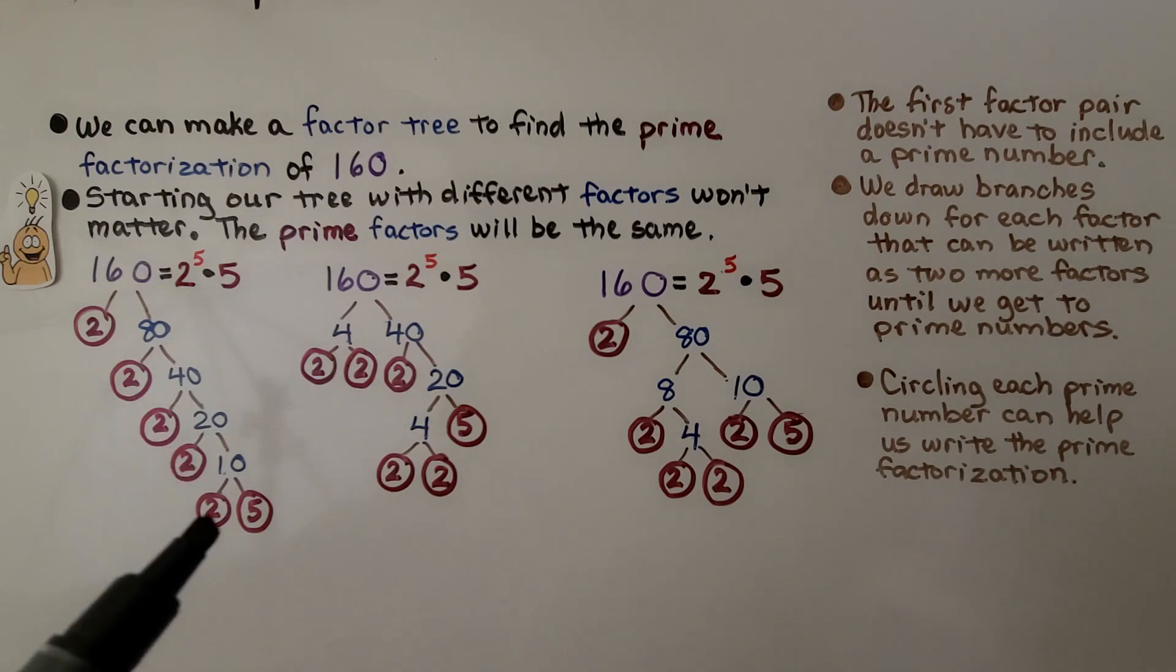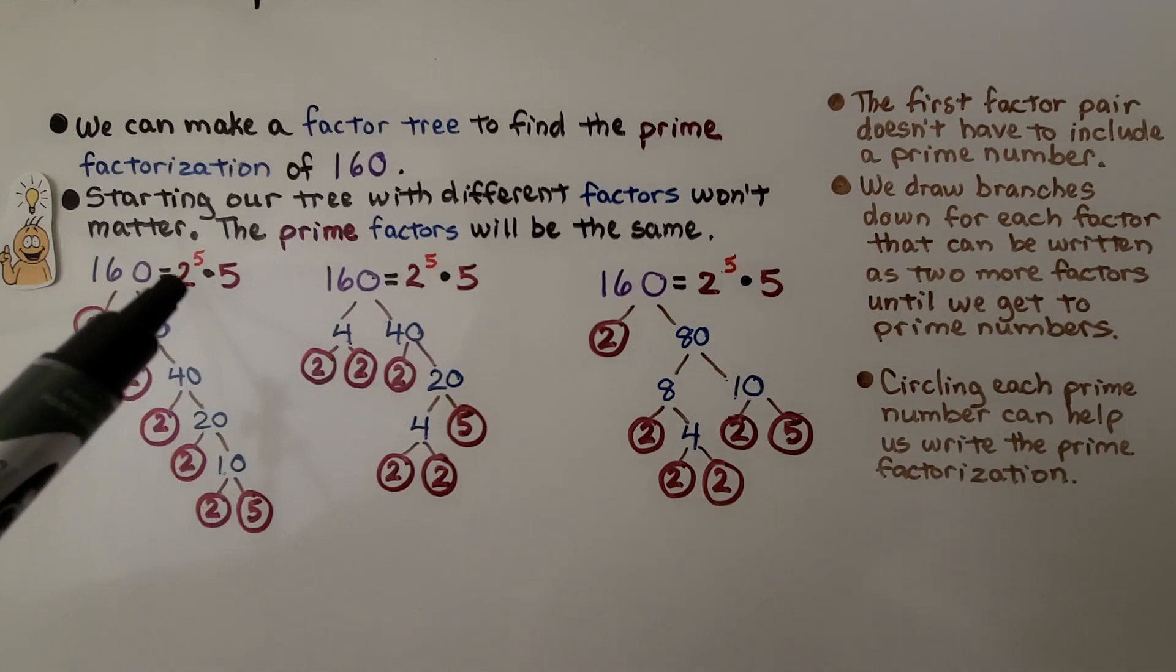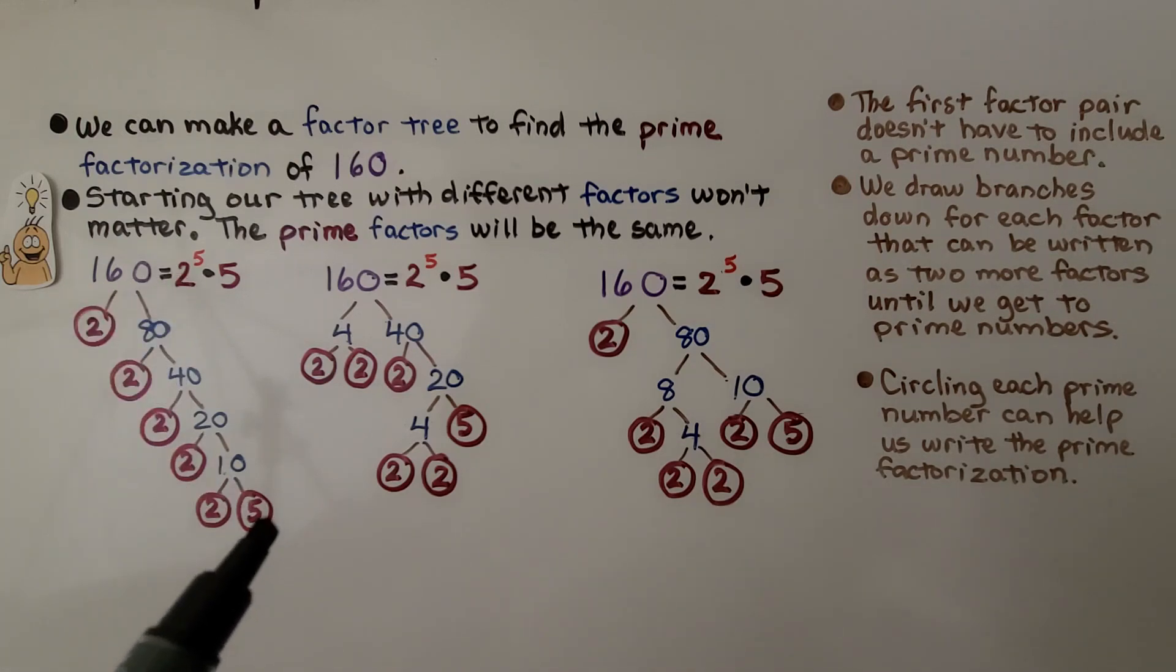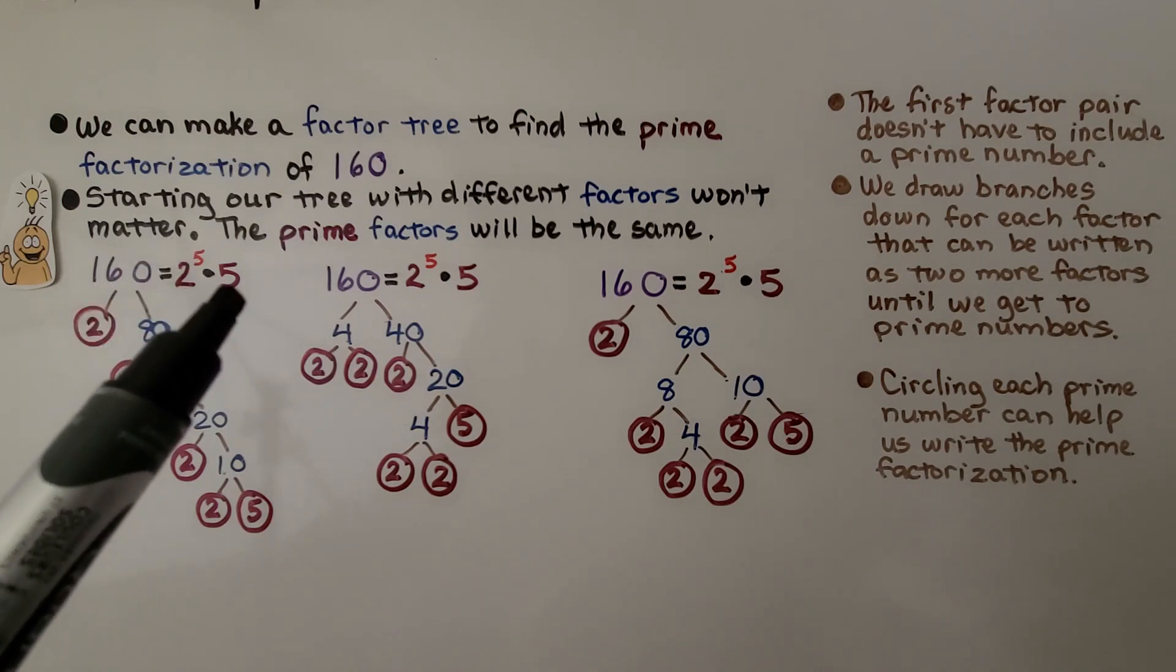We count how many 2's we have. 1, 2, 3, 4, 5. So we have 2 raised to the fifth power, and we have 1, 5. We have 2 raised to the fifth power times 5.